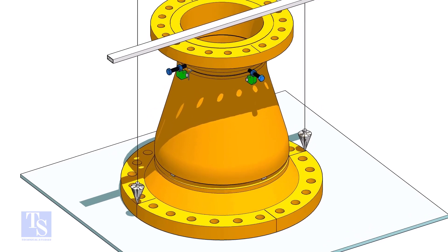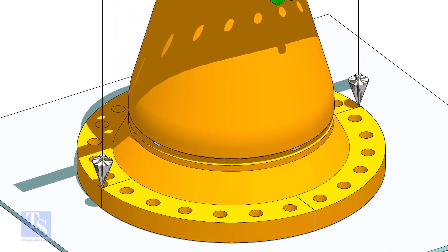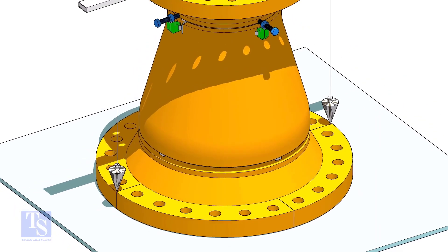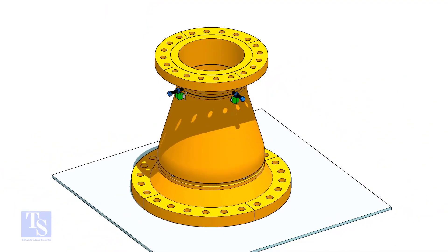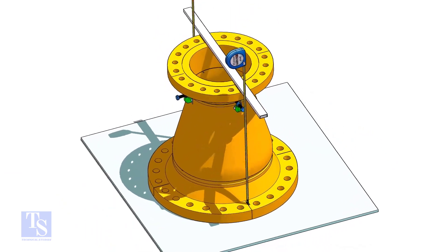Now check the other sides. If the alignments are within an acceptable limit, check the height. I suggest you check the height from face to face of the flange.